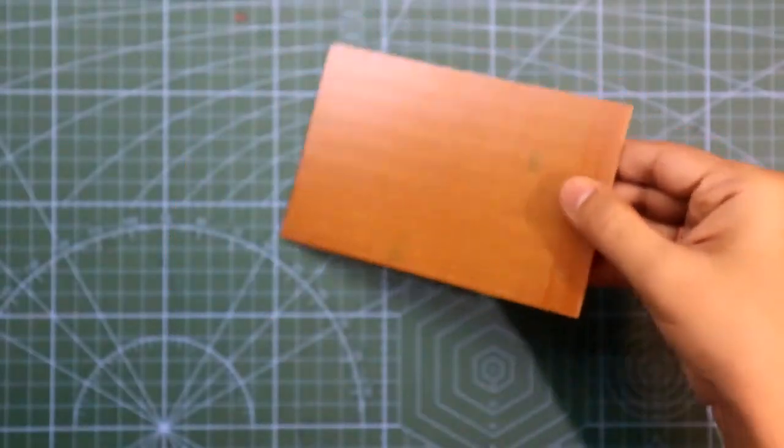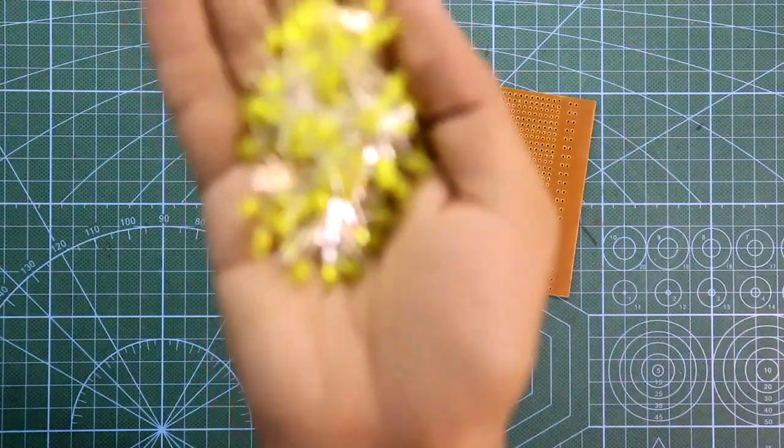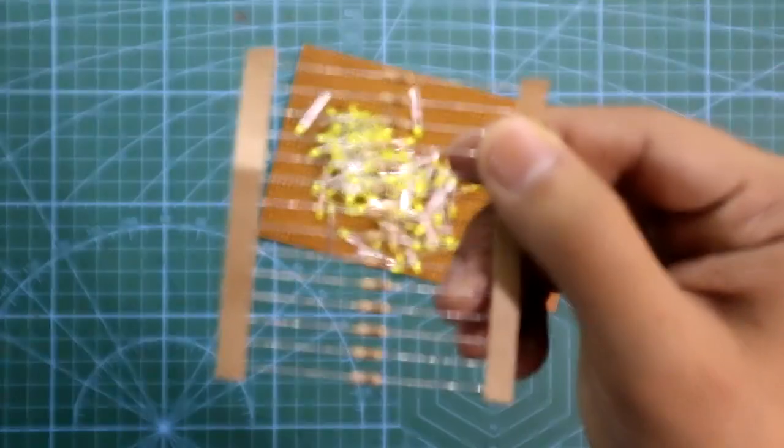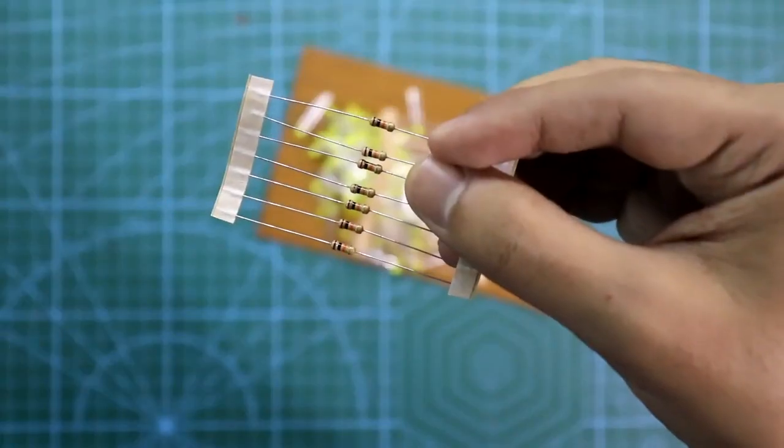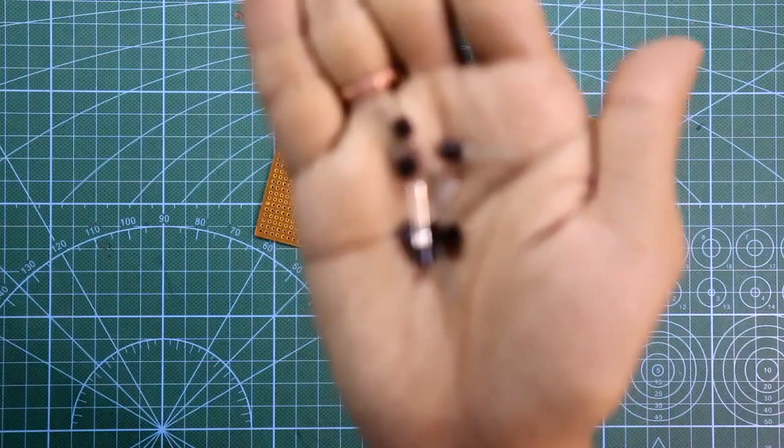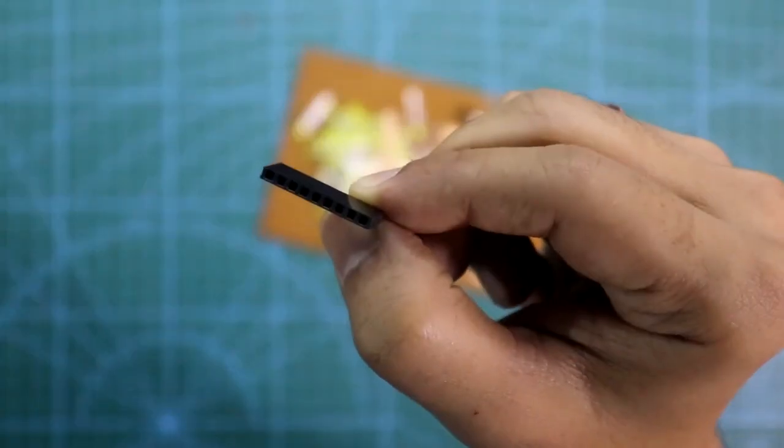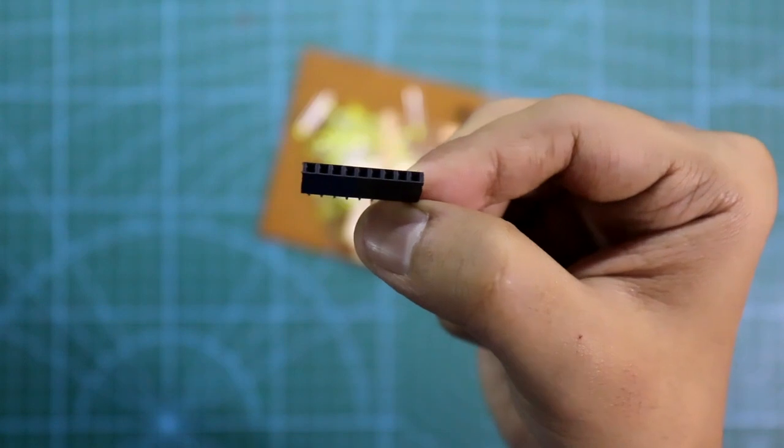For this we need a PCB like this, 70 LEDs, 14 piece of 100 ohms resistor, 7 pieces of 10 kilo ohms resistor, 7 piece of transistor, and a female connector with 9 connections.